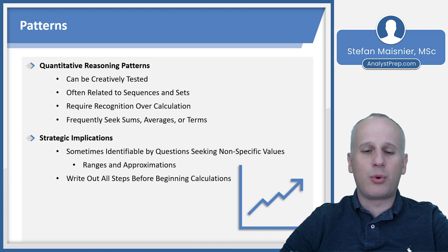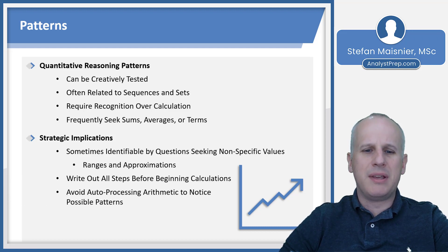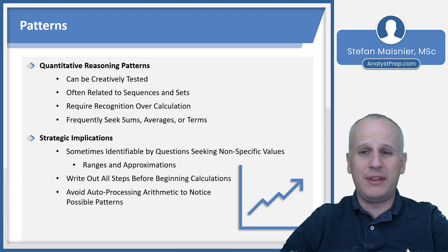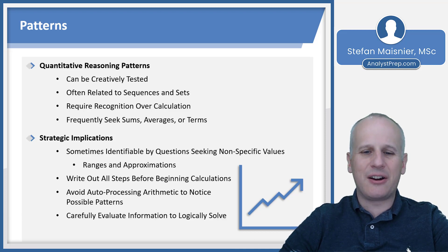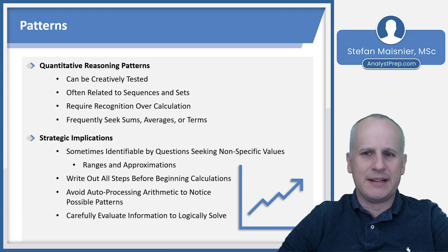You have to write out all the steps before you begin your calculations to recognize a pattern. Because if you auto-process the arithmetic, you may end up missing out on the possible pattern. You need to carefully and logically evaluate your information as opposed to worrying about finding a common denominator for 75 fractions.